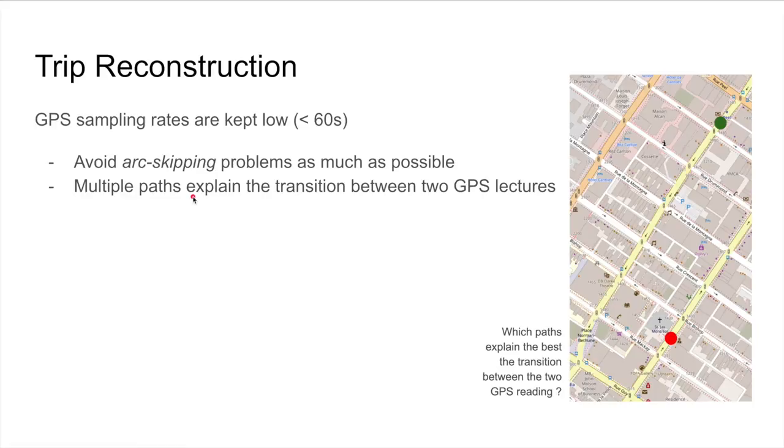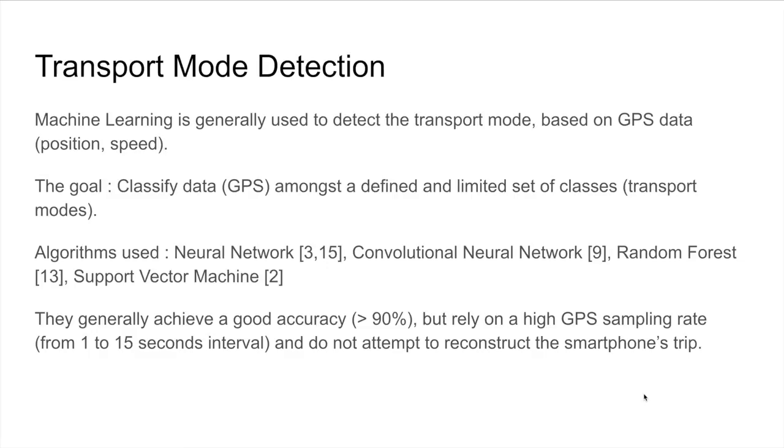This basically creates a problem where multiple paths can explain the transition between two GPS readings. For transport mode detection, machine learning is generally used and it will be based on GPS data, which includes position and speed. The goal will be to classify this data among a defined, limited set of classes, which are the transport modes.